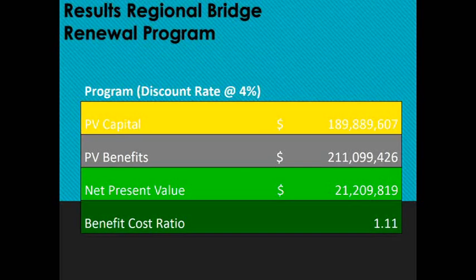Looking at the results for the whole Regional Bridge Renewal Programme: total capital costs at 4% discount rate came to about $190 million, with benefits of about $211 million. The benefits outweigh the costs, giving a net present value of about $21.2 million and a benefit cost ratio of 1.11. While the BCR is reasonably low, the benefits do outweigh costs and the NPV is positive, making the program as a whole economically viable.